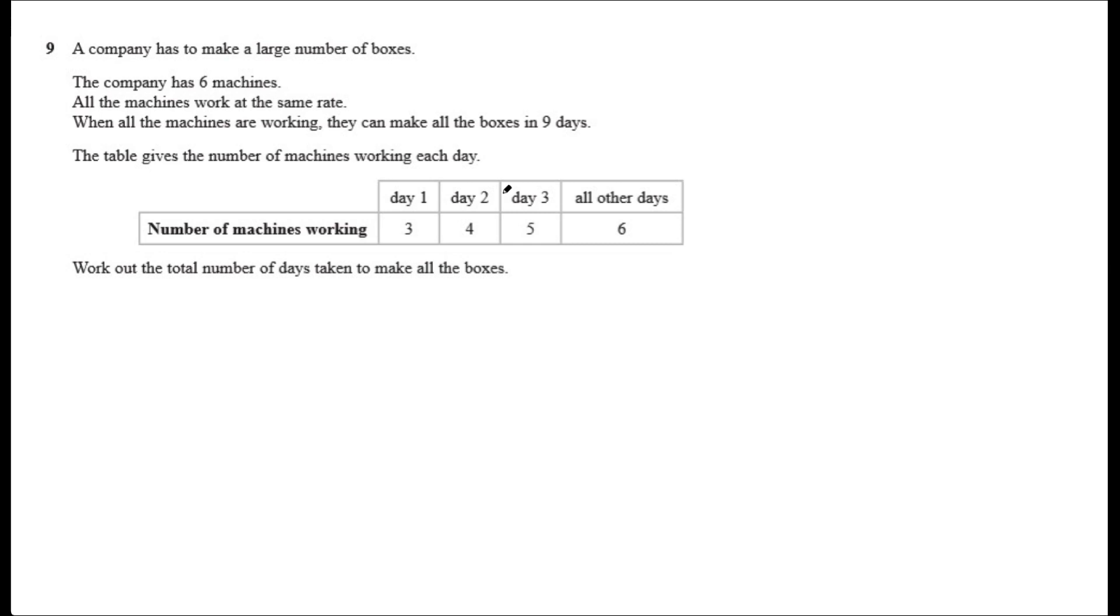So I've already read through this question, but I'm going to read through it again just to kind of start afresh. This question says: A company has to make a large number of boxes. The company has six machines. All the machines work at the same rate. When all the machines are working, they can make all the boxes in nine days.